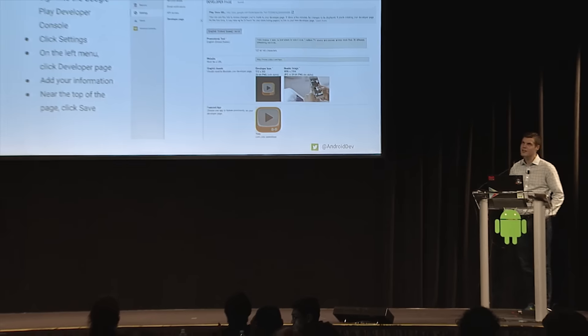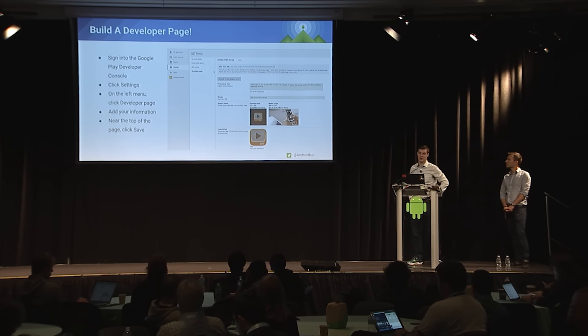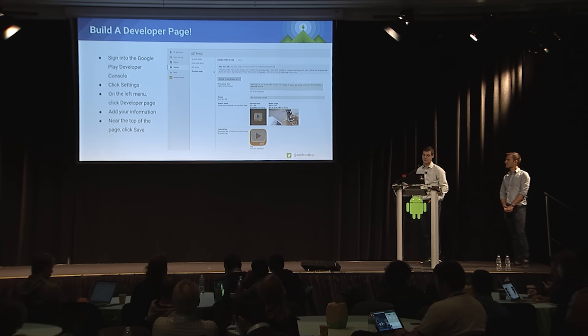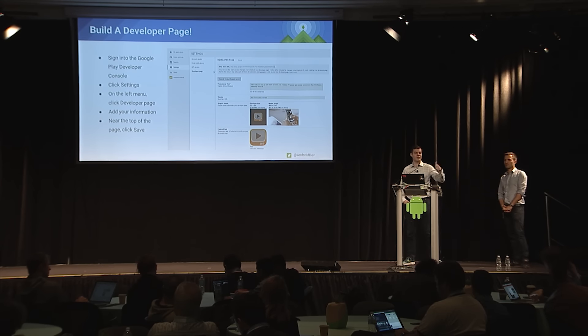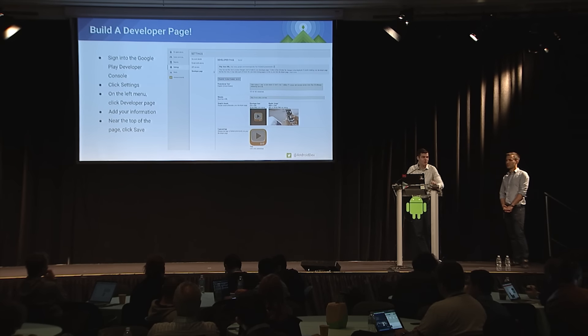How do we actually build a Developer Page? If you want to get interactive — I see a lot of you with laptops out — feel free to fire up your Developer Consoles right now. This will literally take five minutes. On the left side, click Settings, then Developer Page. Add your information: start in English, put your promotional text — up to 140 characters. Add a translation if you want, stick your company website there too. You'll need a developer icon and a large header image. Optionally, add a featured app. You can also rotate that featured app seasonally for promotions.